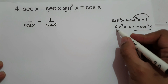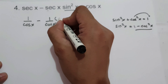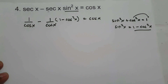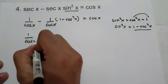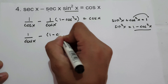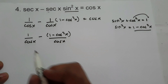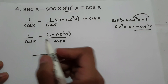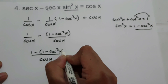So let us substitute this one to the given equation. We have 1 over cosine x minus 1 over cosine x times the quantity 1 minus cosine squared x equals cosine x. Let us simplify: let us distribute, and since we have the same denominator, let us copy the denominator cosine x, and let us write the numerator: 1 minus the quantity of 1 minus cosine squared x. Then let us distribute the negative sign: negative times 1 is negative 1, negative times negative is positive cosine squared x.